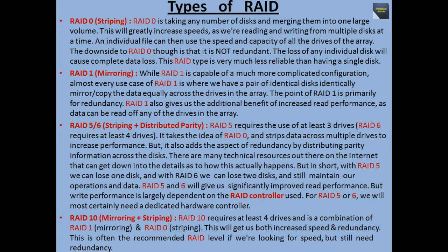Second type: RAID 1, mirroring. While RAID 1 is capable of a much more complicated configuration, almost every use case of RAID 1 is where we have a pair of identical disks that identically mirror or copy the data equally across the drives in the array. The point of RAID 1 is primarily for redundancy. RAID 1 also gives us the additional benefit of increased read performance, as data can be read from any of the drives in the array.